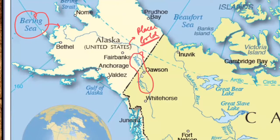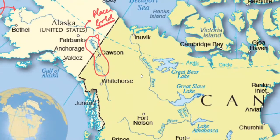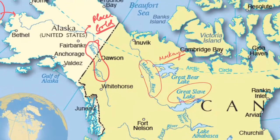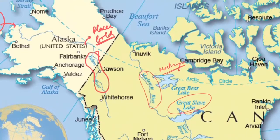Next is the Mackenzie River, which is entirely in Canada. Its source is Great Slave Lake — a question on Great Slave and Great Bear lakes had appeared in the 2021 prelims exam. The Mackenzie River flows into the Beaufort Sea. For any river, it is important to know its source, the direction it flows, and into which sea it drains.